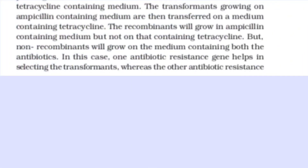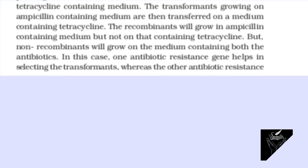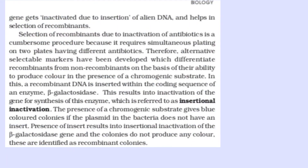The recombinant plasmid will lose tetracycline resistance due to insertion of foreign DNA, but can still be selected out from non-recombinants by plating the transformants on ampicillin-containing medium. The transformants growing on ampicillin-containing medium are then transferred onto a medium containing tetracycline. The recombinant will grow in ampicillin-containing medium but not on that containing tetracycline, while non-recombinants will grow on the medium containing both antibiotics. This selection is a cumbersome procedure because it requires simultaneous plating on two plates having different antibiotics.